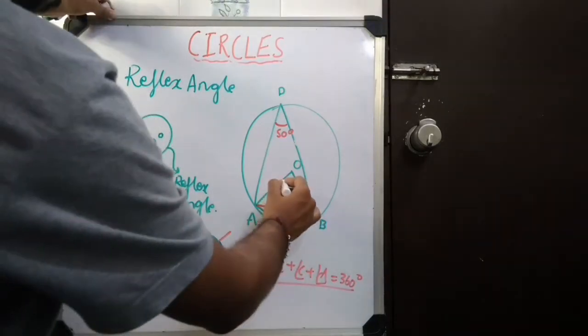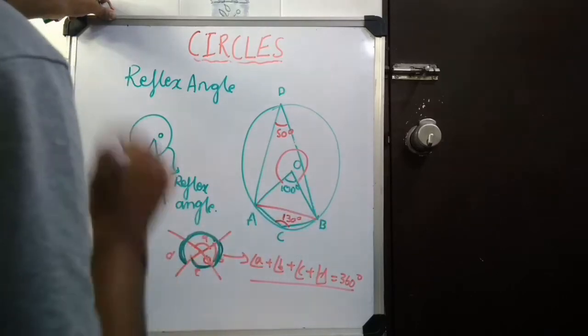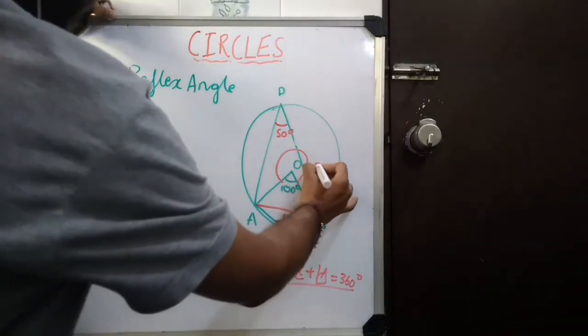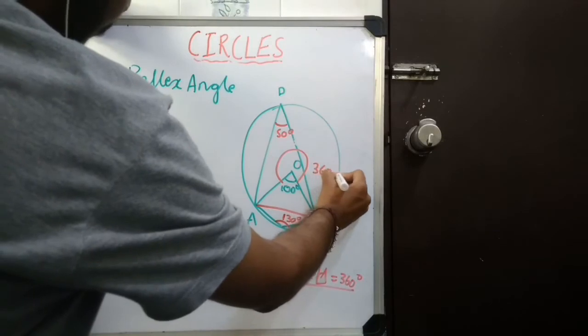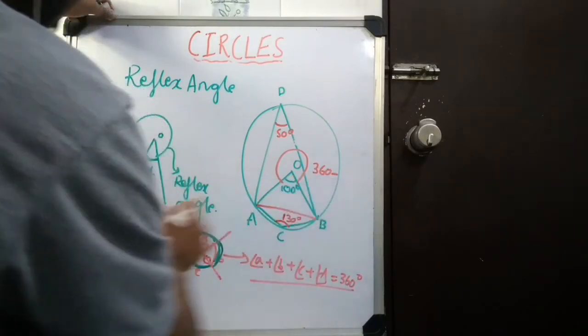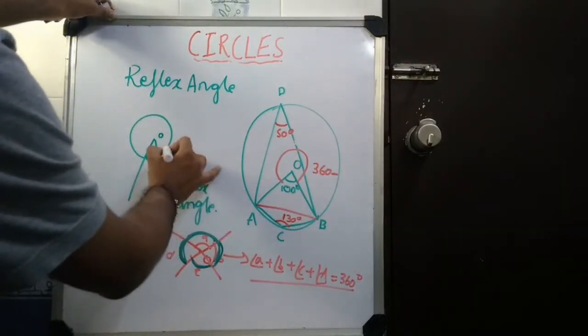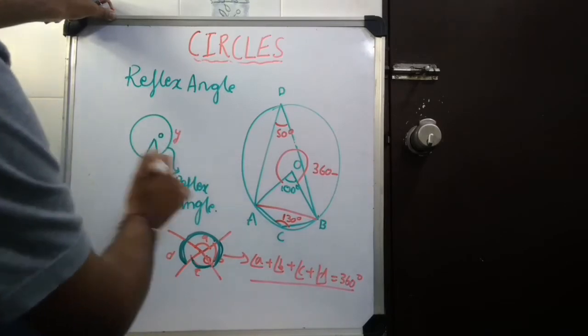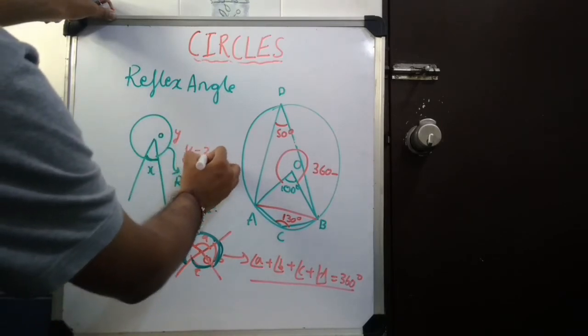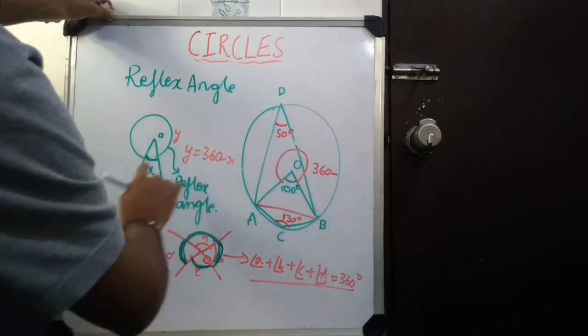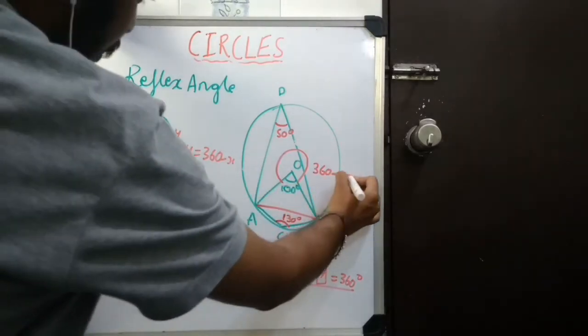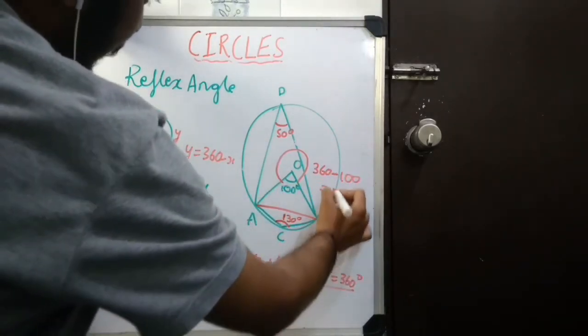Now, I calculate the reflex angle. Reflex angle is? How do I calculate it? 360 minus this particular angle. So, to generalize it, I will write, let me call this as Y reflex angle. Y is equal to 360 minus X. So, what is this X in this case? It is 100. So, it is 260.